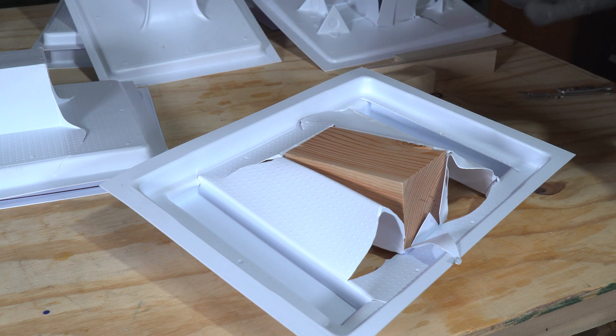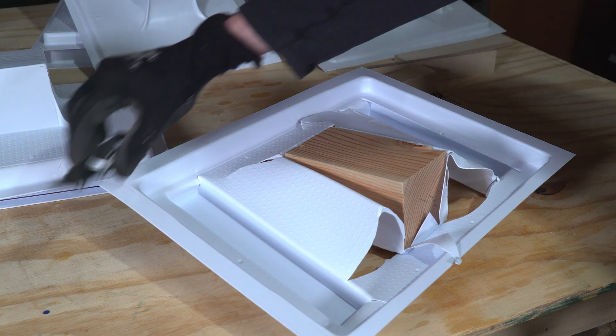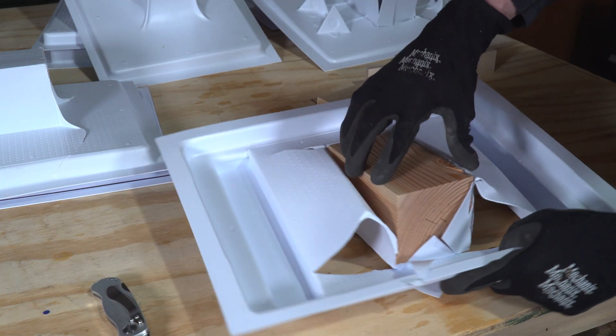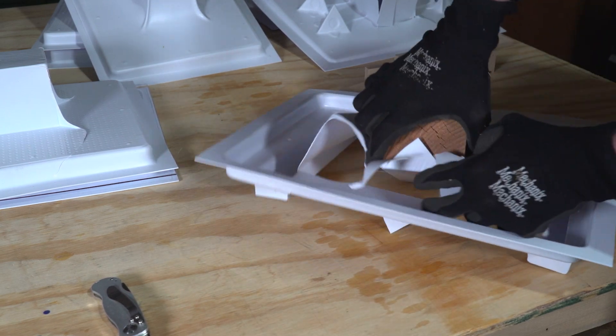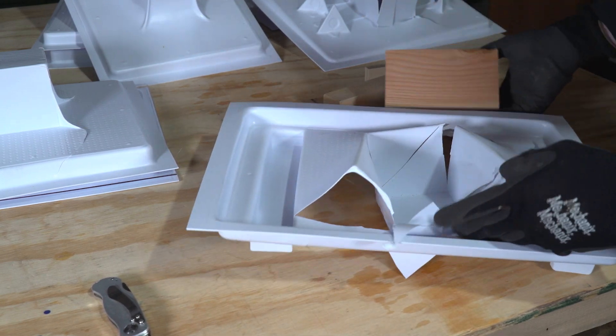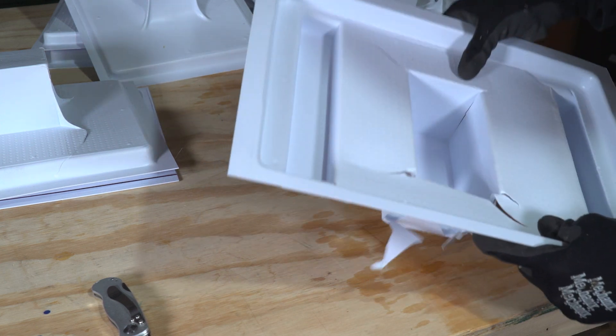For testing this vacuum former, I used this block. It was not possible to separate these without destroying the plastic in the process. The sides of a mold need to be tapered by at least 3 to 5 degrees in order to avoid this issue.